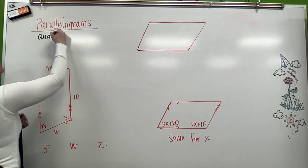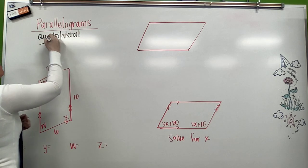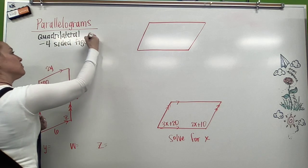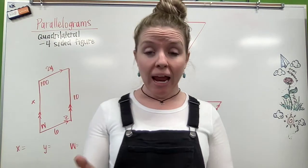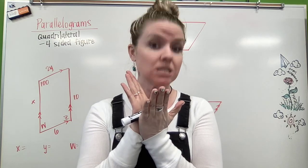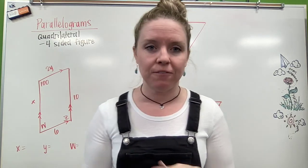A quadrilateral, if you remember, is any four-sided figure. Those sides have to be nice and straight, and we're talking about our convex quadrilaterals. So any nice four-sided figure,